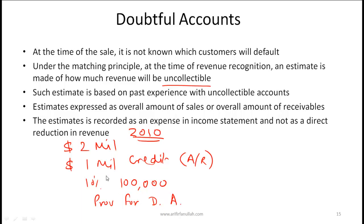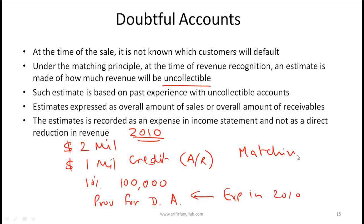That $100,000 is shown as a provisional expense called provision for doubtful accounts (or provision for bad debts) in the income statement. This is consistent with the matching principle: since the revenue is recognized in 2010, the associated bad debt expense must also be recognized in 2010, tied to that $1 million revenue.